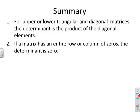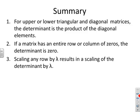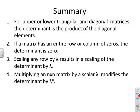In summary: for upper or lower triangular and diagonal matrices, the determinant is the product of the diagonal elements. If a matrix has an entire row or column of zeros, the determinant is zero. New rules: scaling any row or column by lambda scales the determinant by lambda; multiplying an n×n matrix by a scalar lambda modifies the determinant by lambda to the n.